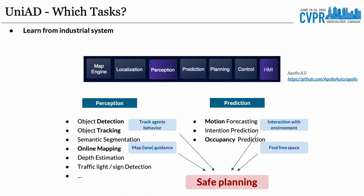Most tasks in autonomous driving fall into three categories: perception, prediction, and planning. The perception part, including detection, tracking, and mapping, focuses on accurate historical observations. The prediction part, including motion prediction and occupancy prediction, imagines future states for safe planning. All tasks contribute to better safety.